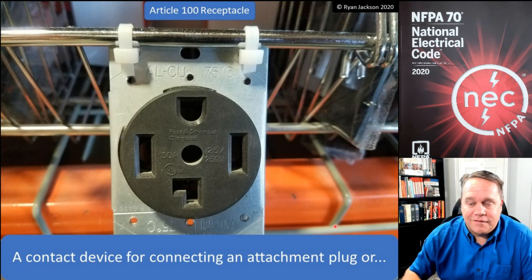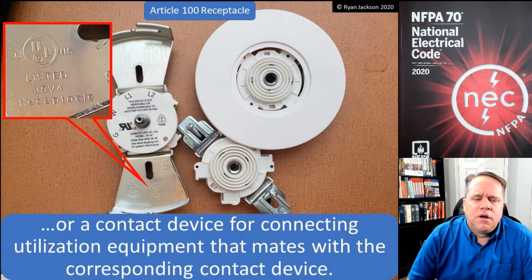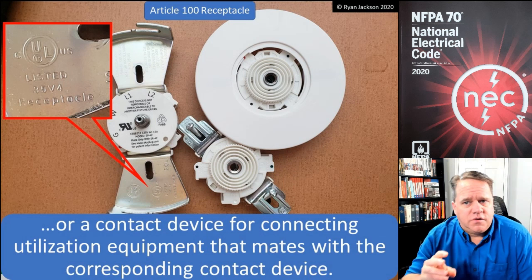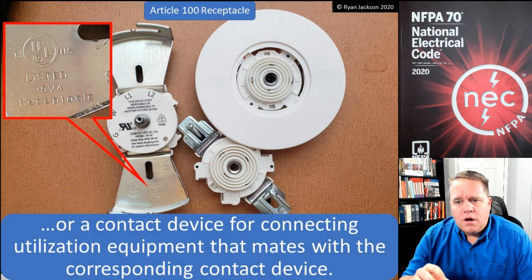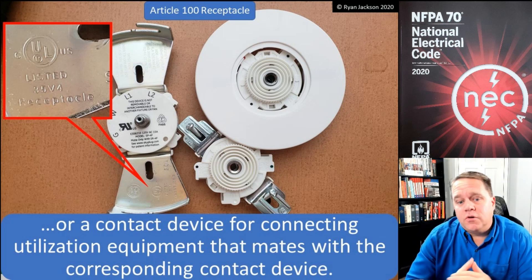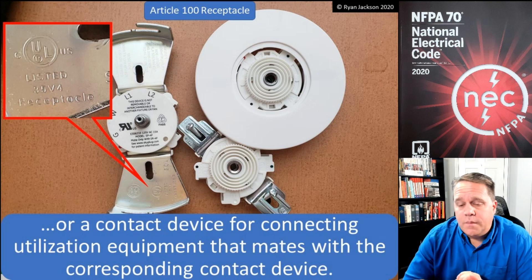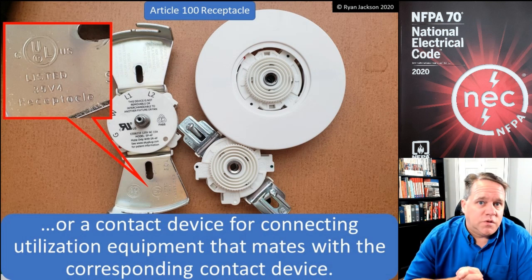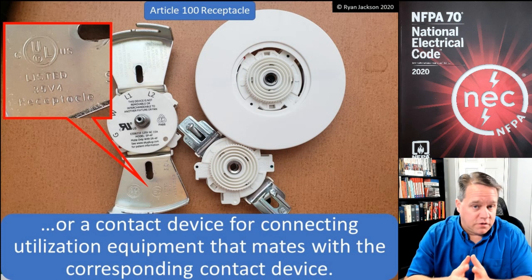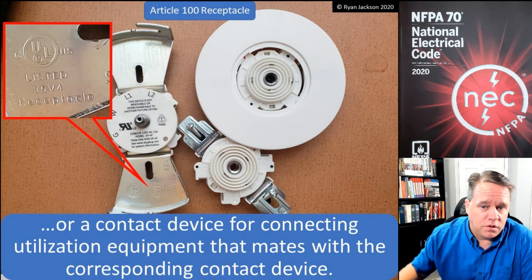What changed in the 2017 code is that they added language to address a new type of technology. It says a receptacle could be a contact device for connecting an attachment plug, but it could also be a contact device for connecting utilization equipment that mates with the corresponding contact device.